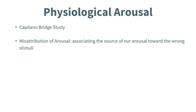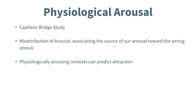As seen in the video, people who crossed the scary bridge were more likely to contact the experimenter later. The reason may be due to the misattribution of arousal effect — where people associate their physiological arousal caused by an activity or stimuli to something else, such as the experimenter. This suggests that engaging in physiologically arousing activities can lead to greater feelings of attraction to others around us — things like sports, working out, or awe-inspiring views in nature may increase physiological arousal and lead to greater attraction.